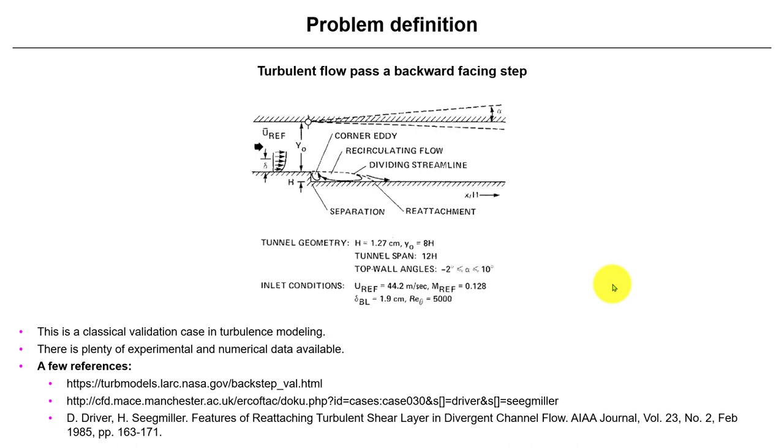Let's talk about this case. This is a classical turbulence modeling case - turbulent flow past a backward facing step. The flow enters here, you have this step, then you'll have separation and this recirculation region, and a reattachment point.